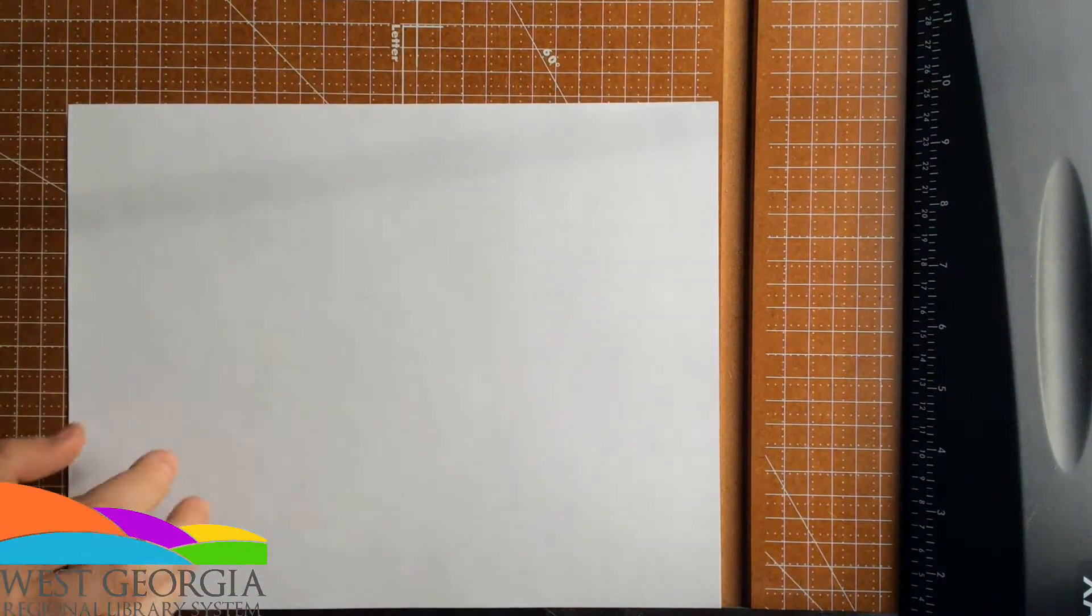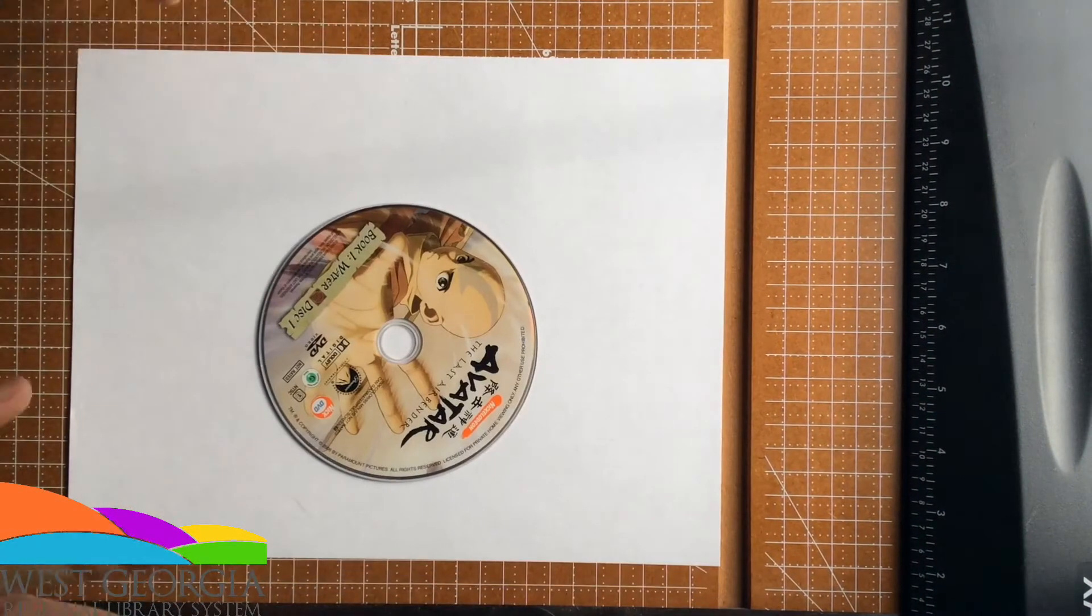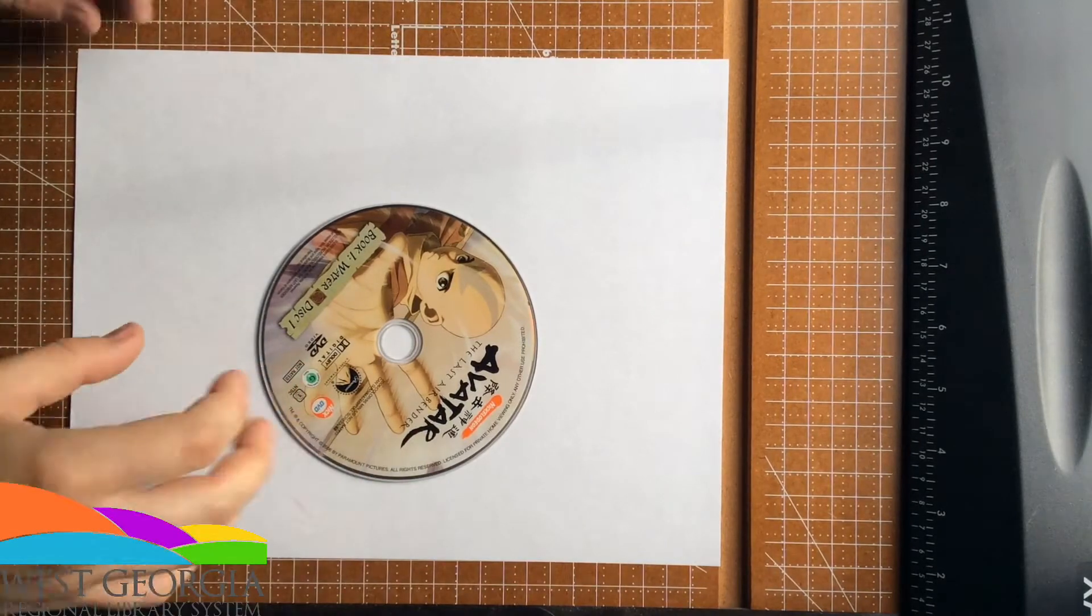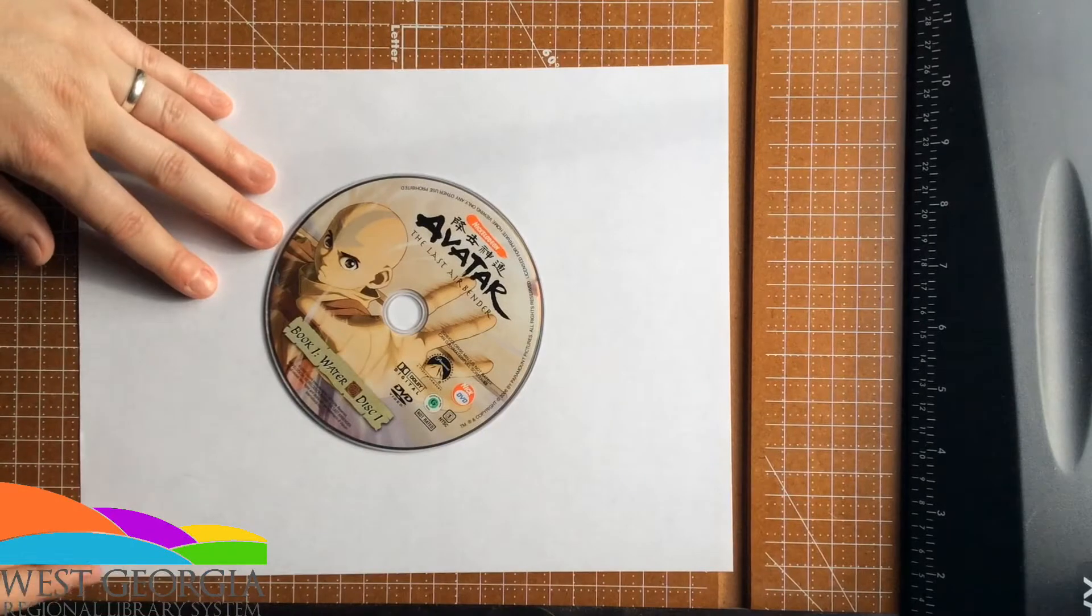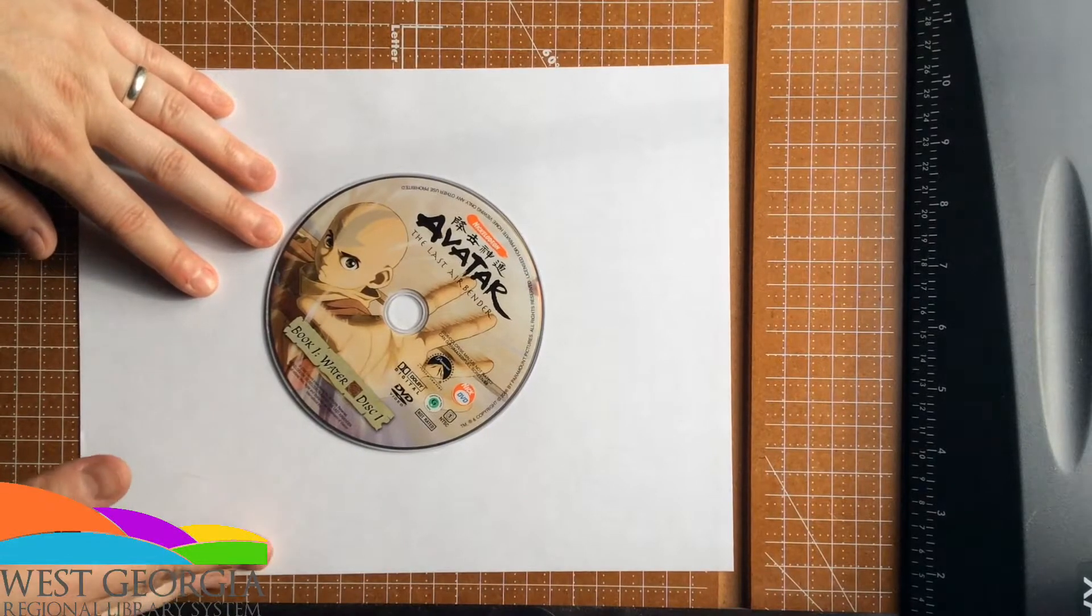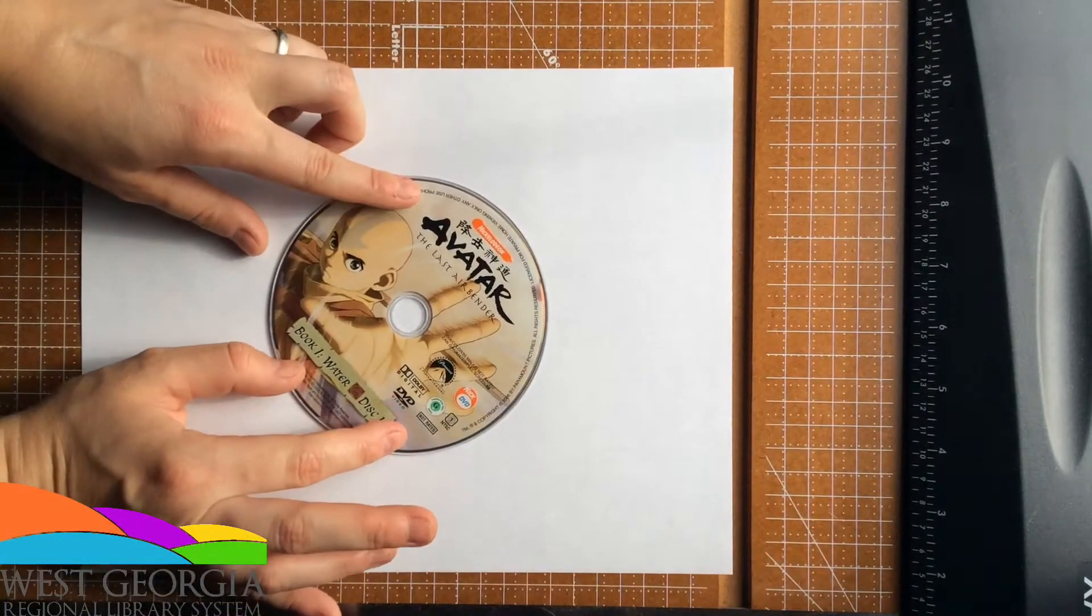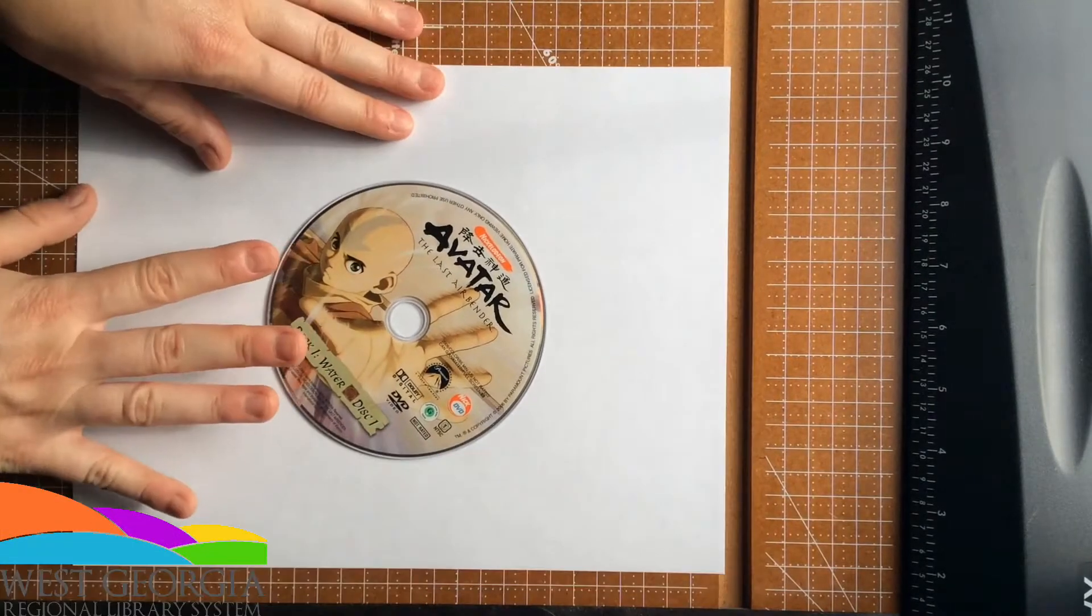For this last project, you need a special ingredient. You need either a CD or a DVD of some sort because you're going to use this to measure your paper. You're going to fold these sides in equidistant, so fold them in half. Try and get your CD perfectly centered.